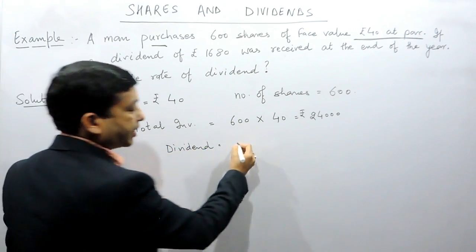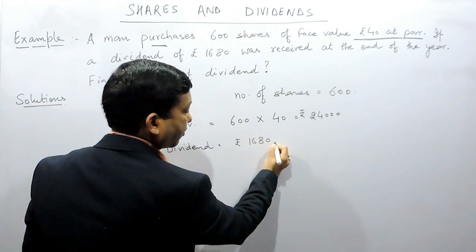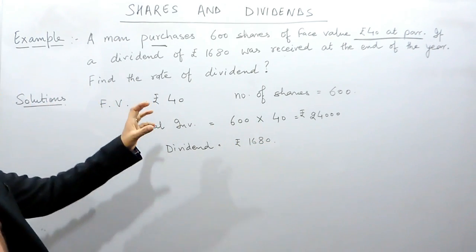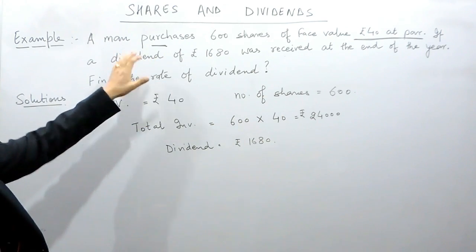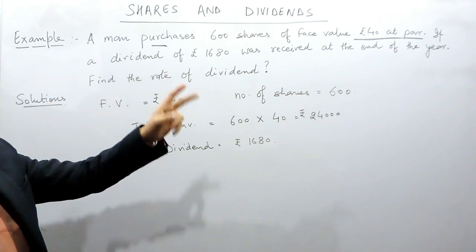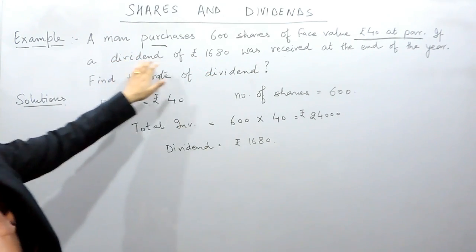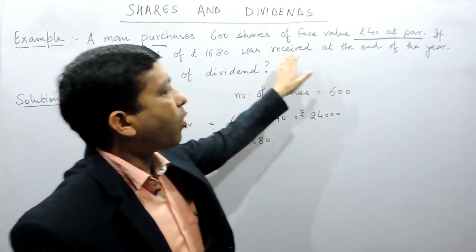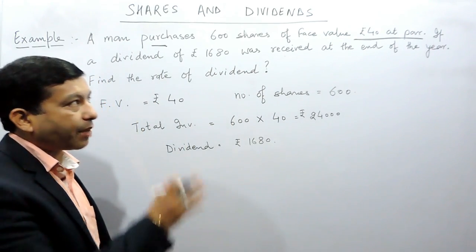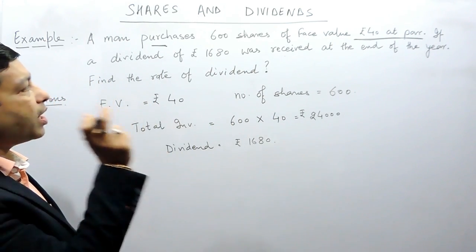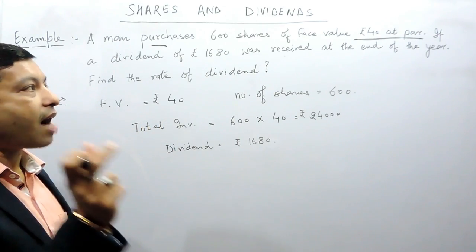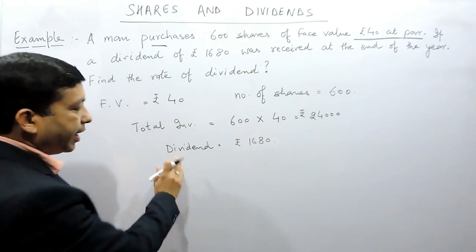Here there is one very important thing: a man may get dividend twice in a year. They might write it as if the dividend of rupees 1680 was received at the end of half year, that means that particular dividend is only for half the year or six months. Here it is for one year, that is 1680.